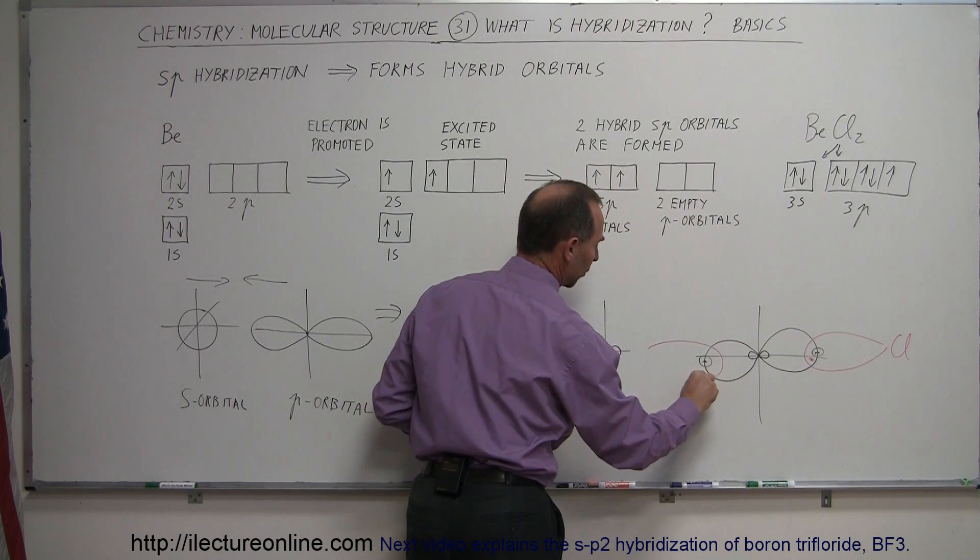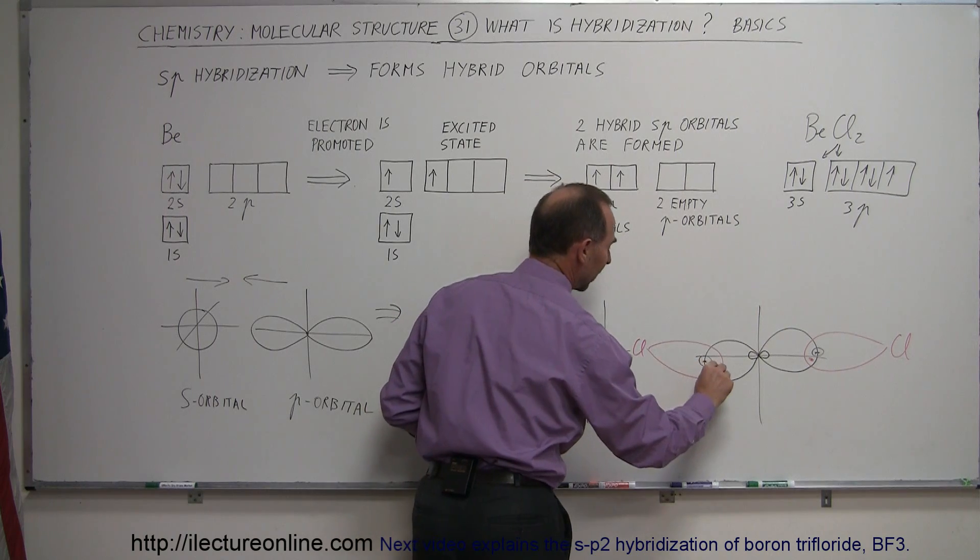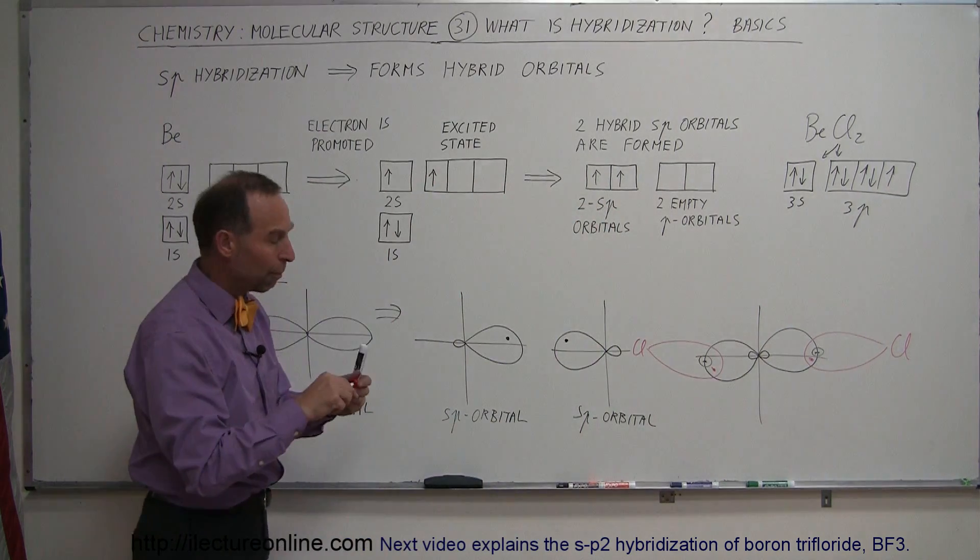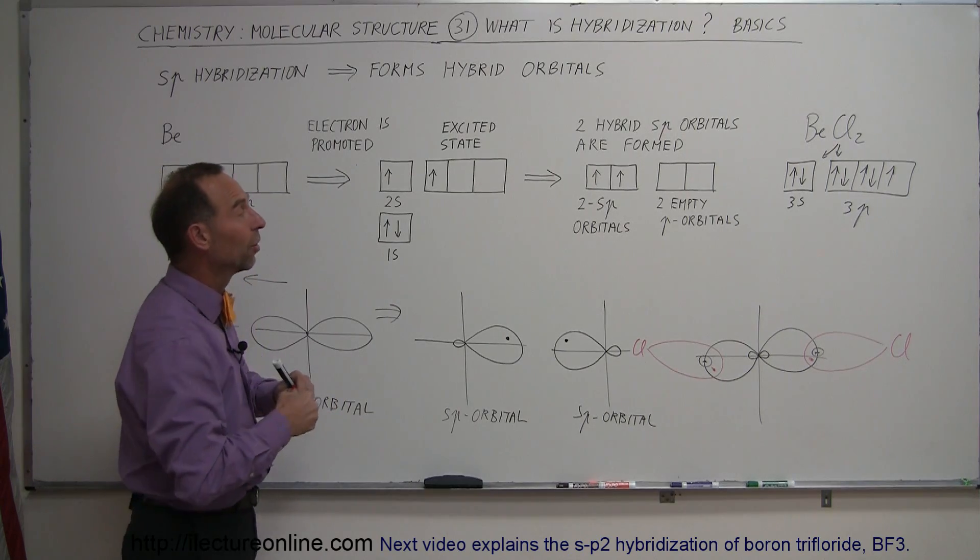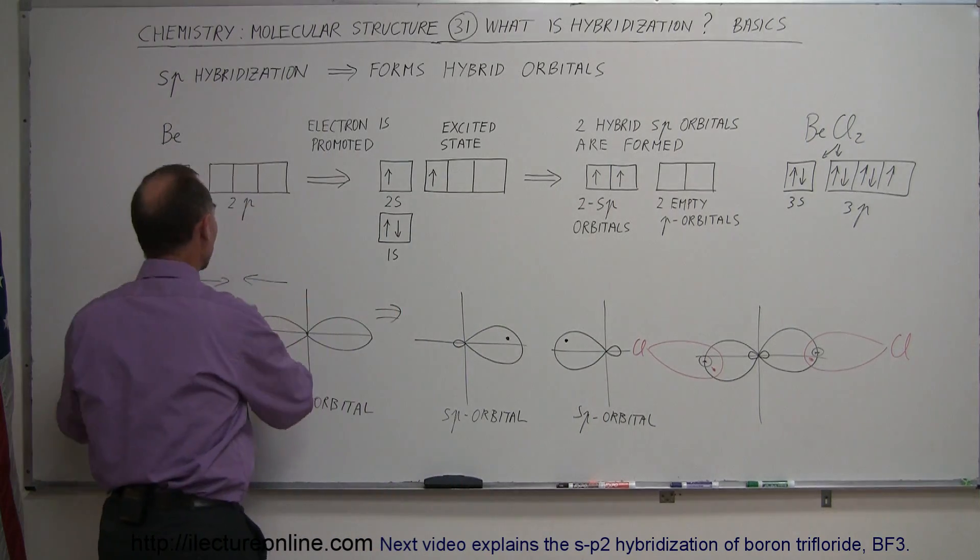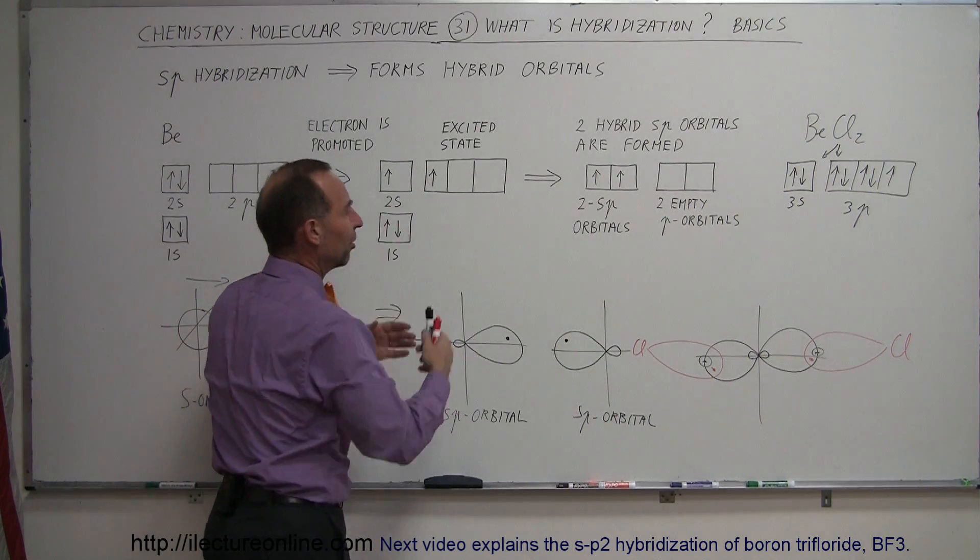So here we have the other p orbital from the other chlorine like that forming another bond like that. And so that's how bonds are made with hybridized orbitals. We change the shape of the orbital now. We typically do that as the atom through this process, through this hybridization.